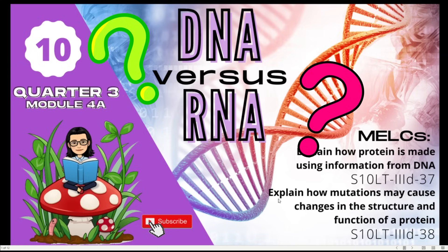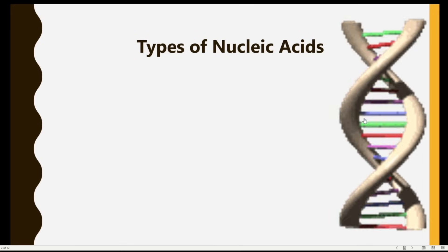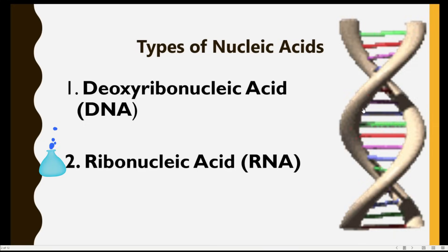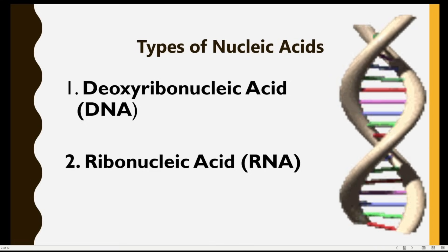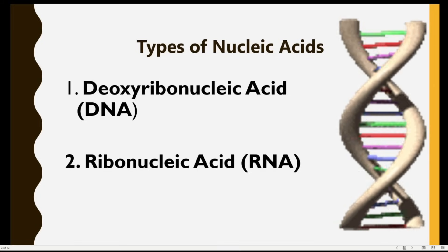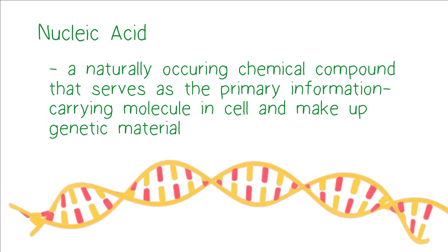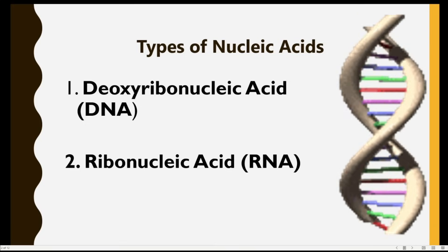So, ano nga ba yung kaibahan ni DNA kay RNA? DNA and RNA are types of nucleic acids. DNA stands for deoxyribonucleic acid, while RNA stands for ribonucleic acid. A nucleic acid is a naturally occurring chemical compound that serves as the primary information-carrying molecule in the cell and makes up genetic material. That's why it is used to identify whether one person is related to another person — it's because DNA is found in genes.